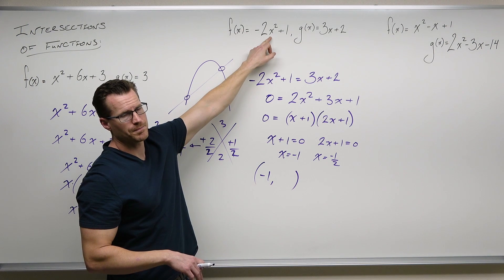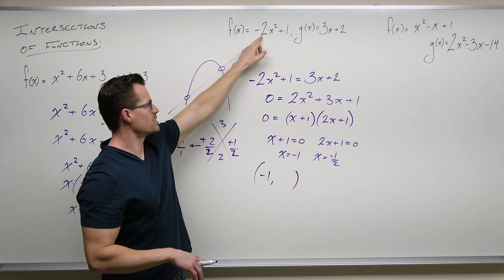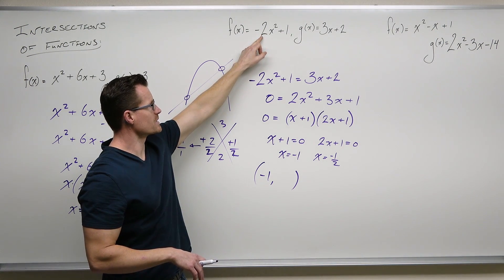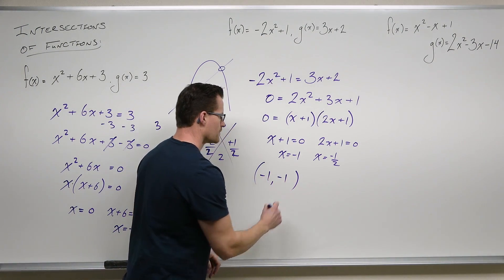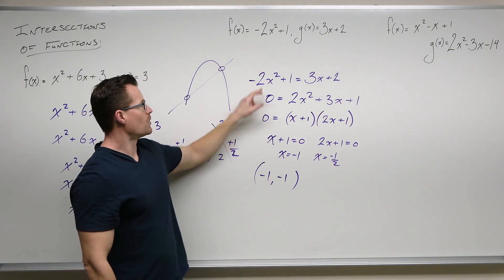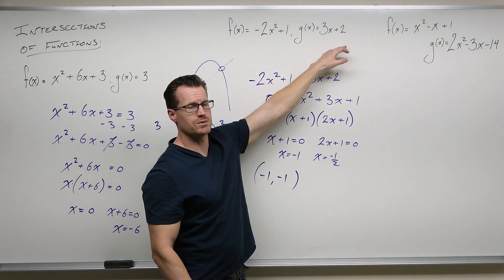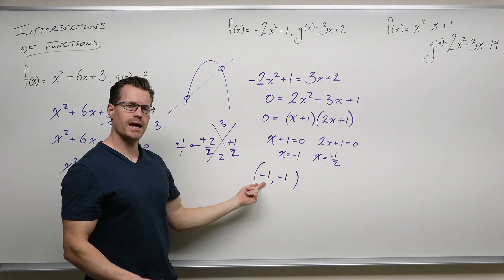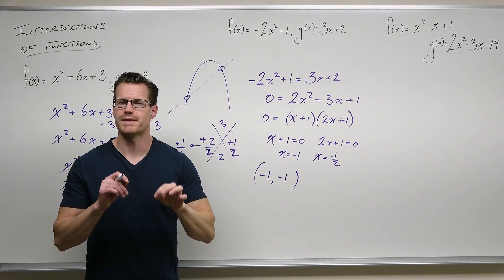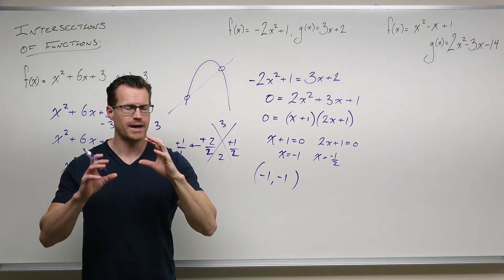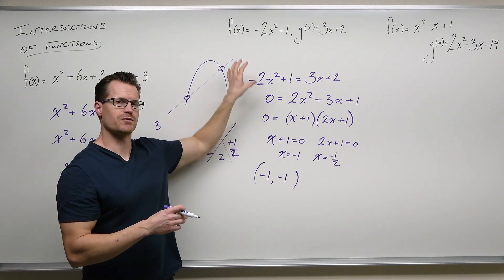So if I plug in negative 1: negative 1 squared is positive 1, positive 1 times negative 2 is negative 2, negative 2 plus 1 is negative 1. If I take the same value and plug it in here: 3 times negative 1 is negative 3, plus 2 is negative 1. So I took this one x value and plugged it into both of my functions just to make sure it gave me the same output. That totally verifies that this is a point of intersection for both of our functions.